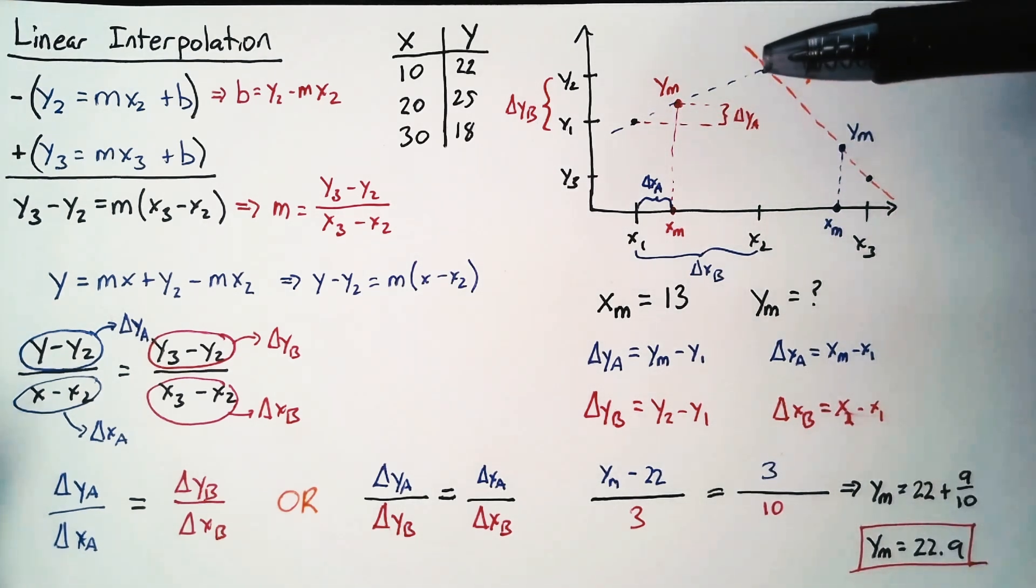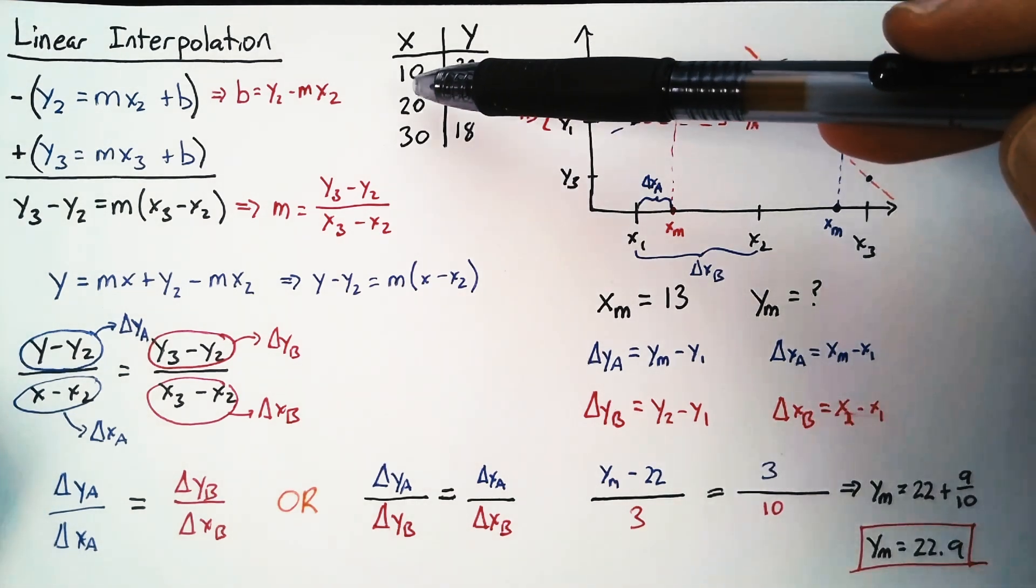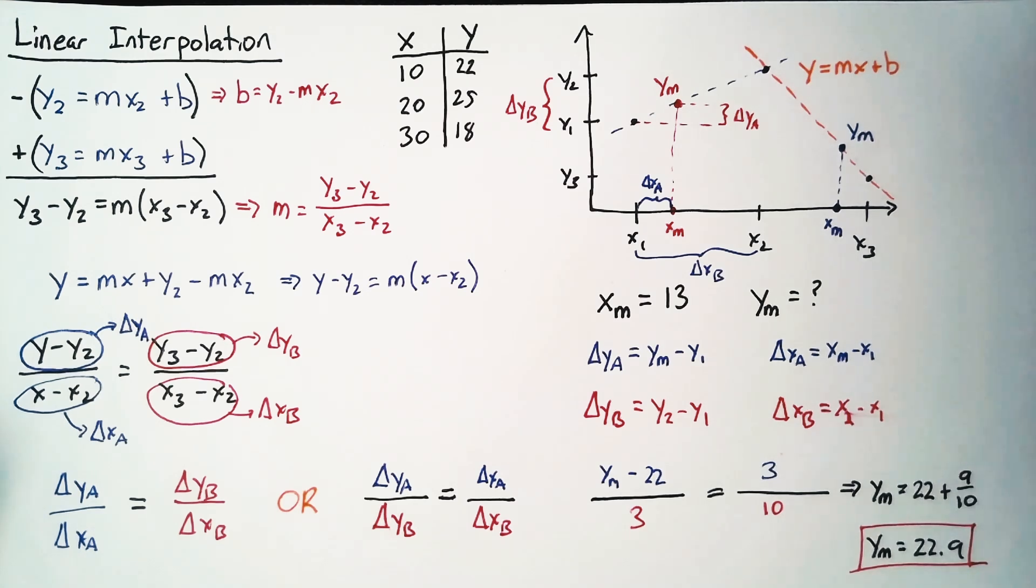So this is a method that we can use in order to get data from intermediate points in tables. In any case, I hope this was helpful, and I will catch you next time.